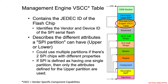The management engine VSCC table contains things like the JEDEC ID, a standardized ID that describes who the vendor was and what the particular device is — for instance, this is a Winbond 64 megabit chip. It also describes attributes for SPI partitions: there's a notion of an upper and lower SPI partition, because different SPI flash chips may have different properties and you might need to accommodate different behaviors.